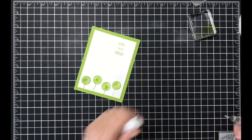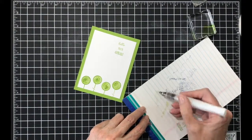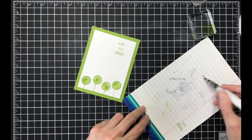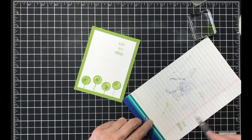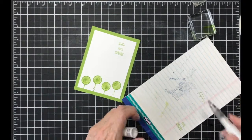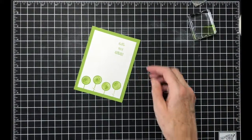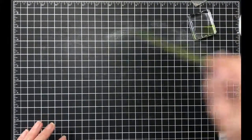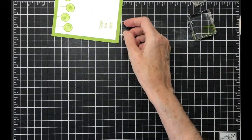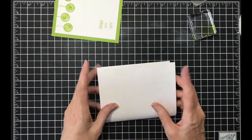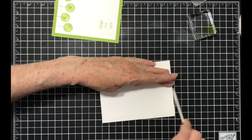There we go, isn't that cute? Now you have to take your Wink of Stella and scribble because you don't want the green to go up in there, because then you'll have a green wink of Stella whether you want it or not. So there we go, so I'm gonna wave this in the air a little bit.